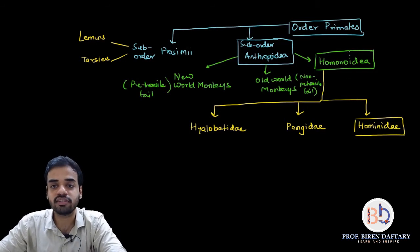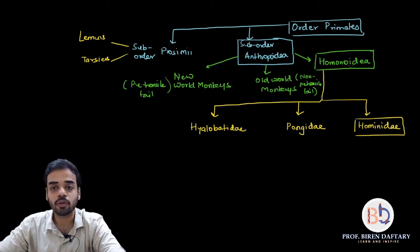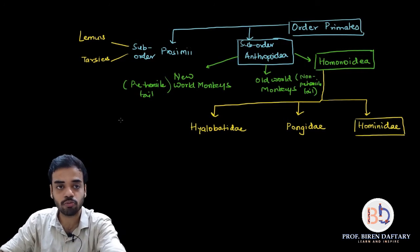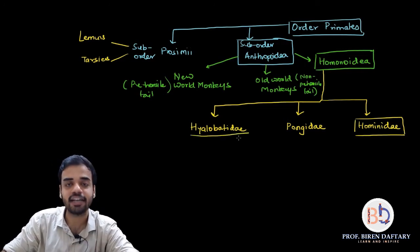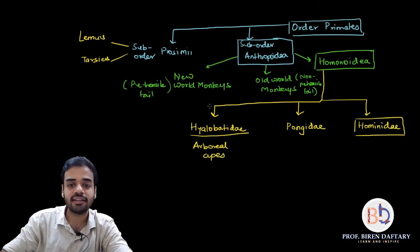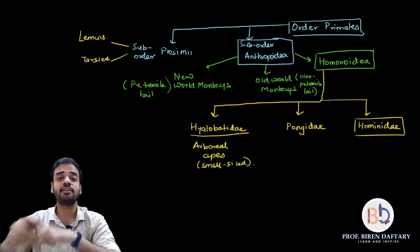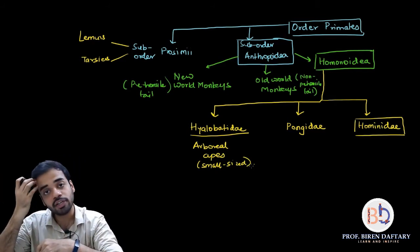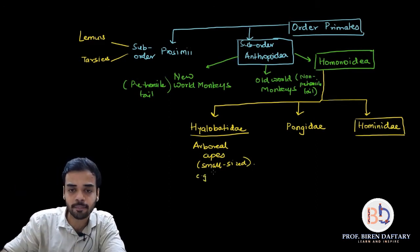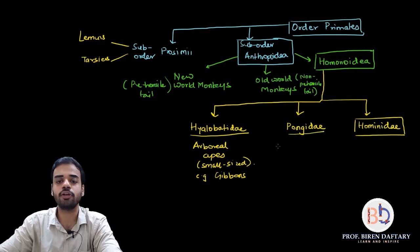Coming to Hominoidea — the group where apes and man are placed — the first subgroup is Hyalobatidae: these are arboreal (tree-dwelling), small-sized apes. Unlike gorillas or chimpanzees, arboreal apes are completely tree-dwelling and small in size. An example is gibbons.